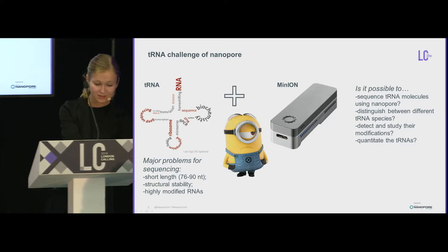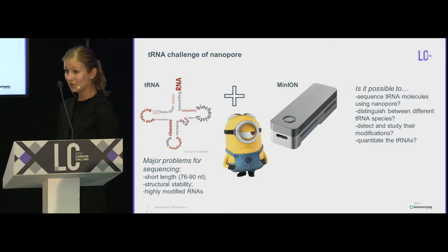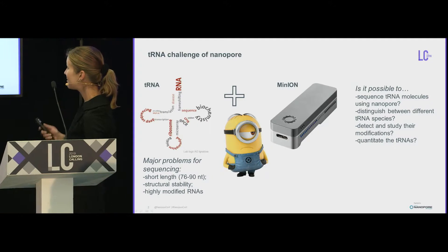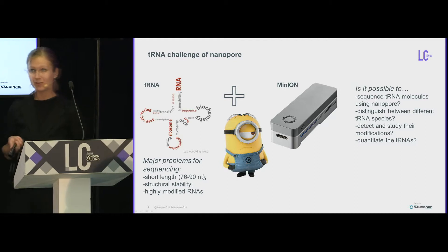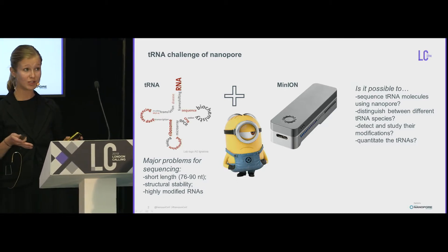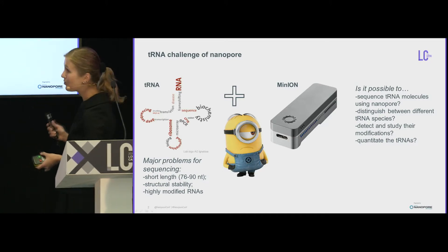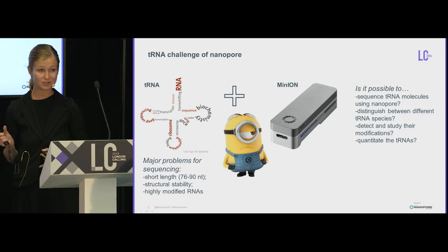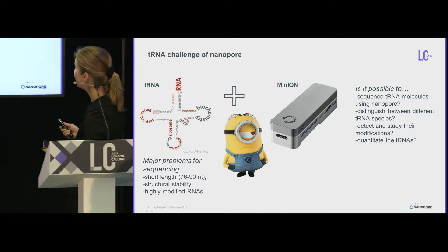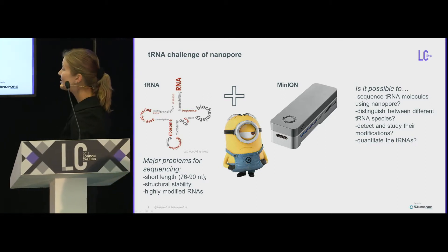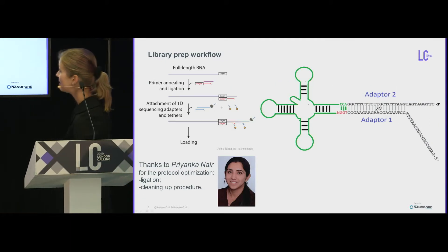We asked ourselves: can we sequence tRNAs using nanopore in general? Can we distinguish different tRNA species? To remind you, there are at least about 40 starting from prokaryotic cells, and all of them differ by just small tiny regions — the sequences are short and quite similar to each other. Can we detect and study their modifications, and can we quantitate the tRNAs and their concentrations?